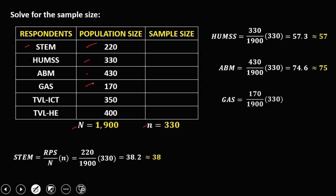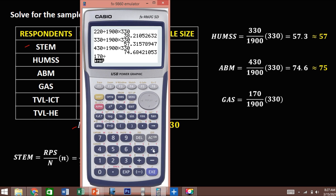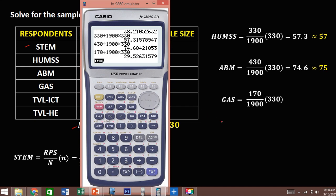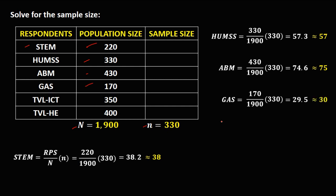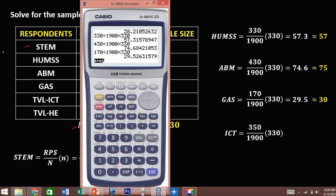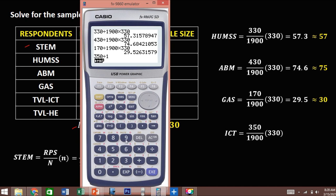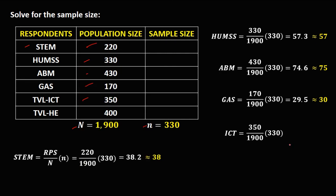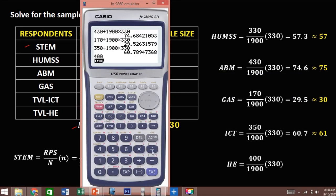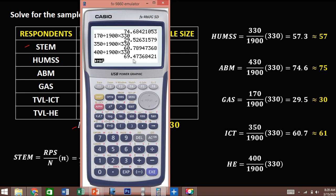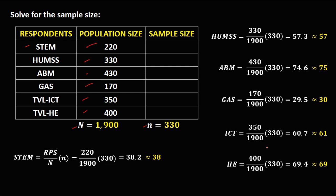For GAS, the population size is 170: 170 divided by 1900 times 330 gives 29.5, approximately 30. For ICT, the population size is 350: 350 divided by 1900 times 330 gives 60.7, approximately 61.